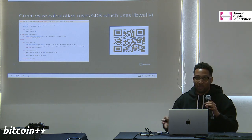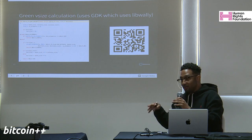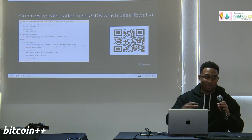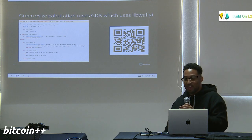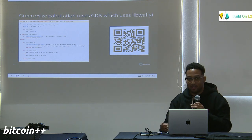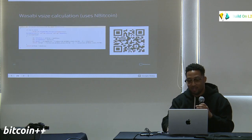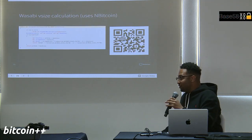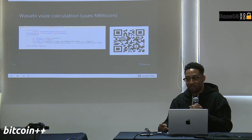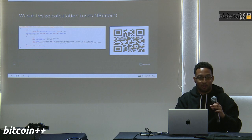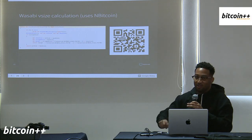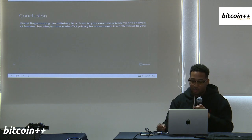Green is a wallet that uses a library called GDK, which uses another library called libwally to calculate the virtual size — they're more accurate and don't take those shortcuts. Similarly, Wasabi uses a library called NBitcoin, a sophisticated Bitcoin library for C#, and they're also more accurate. I've included code snippets for both.